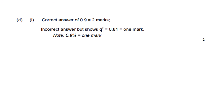The mark scheme awards two marks for the correct answer of 0.9. If you get an incorrect final answer but correctly show q² = 0.81, you can still get one mark. Also, writing 0.9% instead of 0.9 earns one mark.